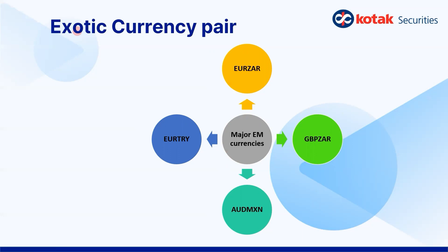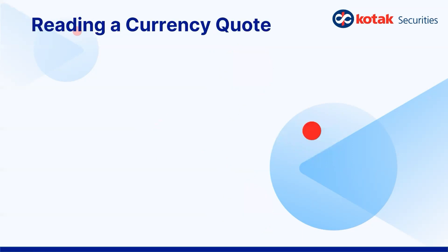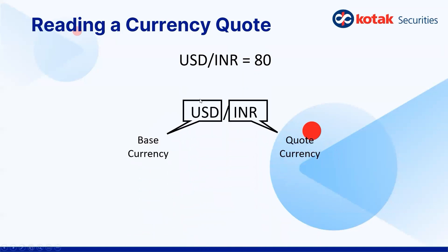Now let us focus on reading a currency code. Say USD/INR = 80. You got a quote for the US dollar and the Indian rupee, and it is trading at 80. The first question in your mind would be: 80 what? In a currency pair, there are two currencies: one is the base currency — the one on the left-hand side. In USD/INR, the USD is the base currency. INR on the right-hand side is the quote currency.